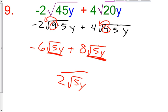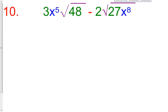Number 10. 3x to the 5th square root of 48 minus 2 times the square root of 27x to the 8th. We're going to simplify these radicals as far as they'll go. So, 48 is the same thing as 16 multiplied by 3. And then you have the square root of 9 times 3x to the 8th.